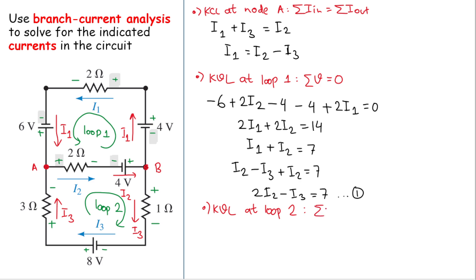KVL states that the sum of voltages in a loop equals zero. For loop two: starting with the 2-ohm resistor — loop enters from the positive terminal — so positive 2 times i2. Then the loop enters the battery from the negative terminal, so minus 4. The loop then enters from the positive terminal, so plus 1 ohm multiplied by i3.